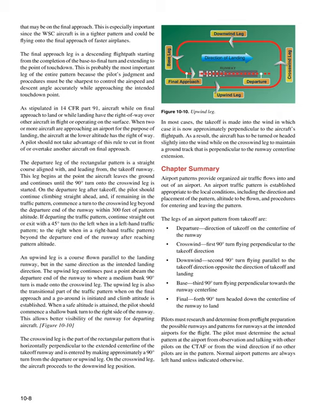Chapter Summary. Airport patterns provide organized air traffic flow into and out of an airport. An airport traffic pattern is established appropriate to local conditions, including the direction and placement of the pattern, altitude to be flown, and procedures for entering and leaving the pattern. The legs of an airport pattern from takeoff are: Departure — direction of takeoff on the centerline of the runway; Crosswind — first 90-degree turn flying perpendicular to the takeoff direction; Downwind — second 90-degree turn flying parallel to and opposite the direction of takeoff and landing; Base — third 90-degree turn flying perpendicular towards the runway centerline; Final — fourth 90-degree turn headed down the centerline of the runway to land. Pilots must research and determine from preflight preparation the possible runways and patterns at intended airports. The pilot must determine the actual pattern from observation, talking with other pilots on the CTAF, or from wind direction if no other pilots are in the pattern. Normal airport patterns are always left-hand unless indicated otherwise.